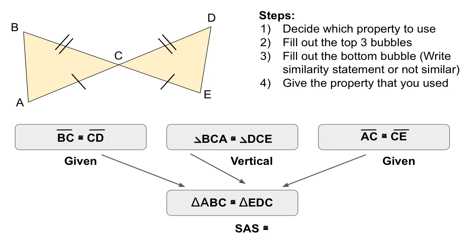The last step is to make sure that you identify what property you use. So we used the property side angle side to prove that these triangles are congruent. So you've got four steps.